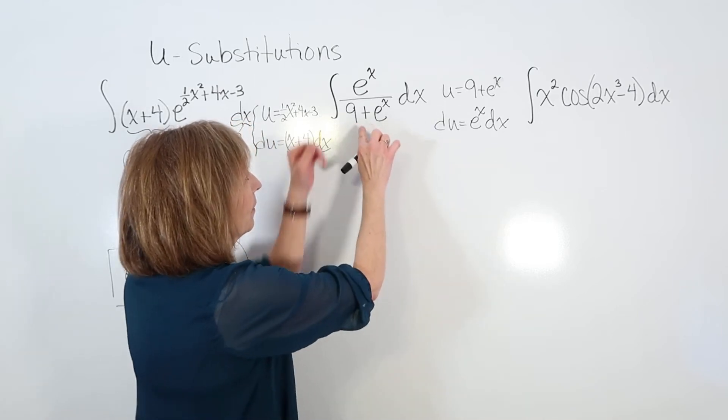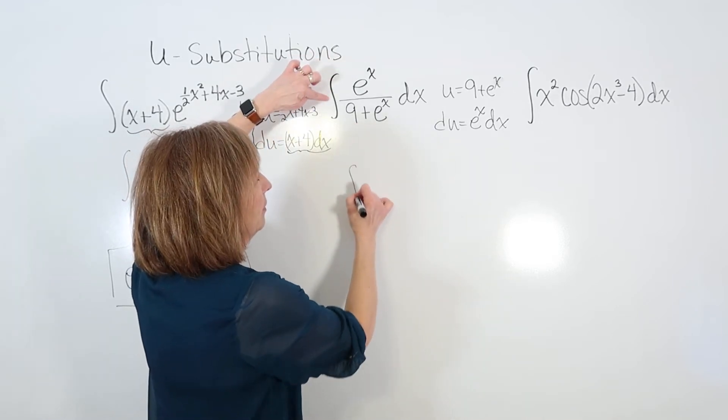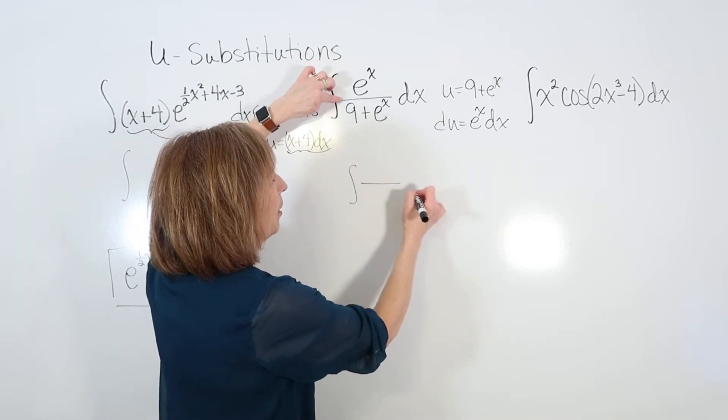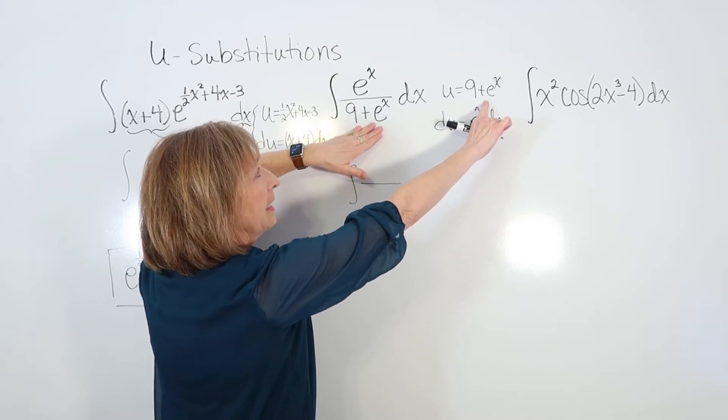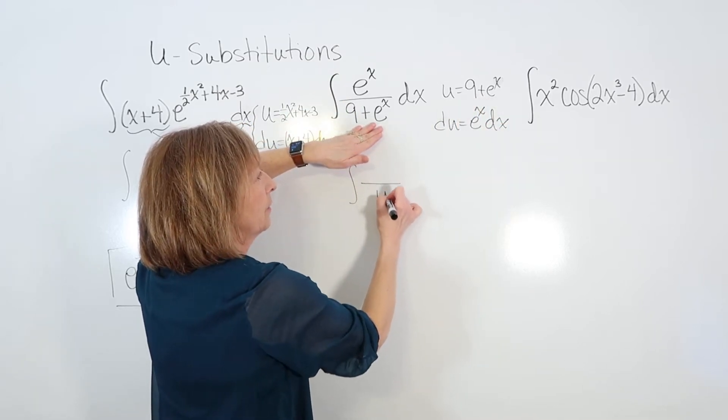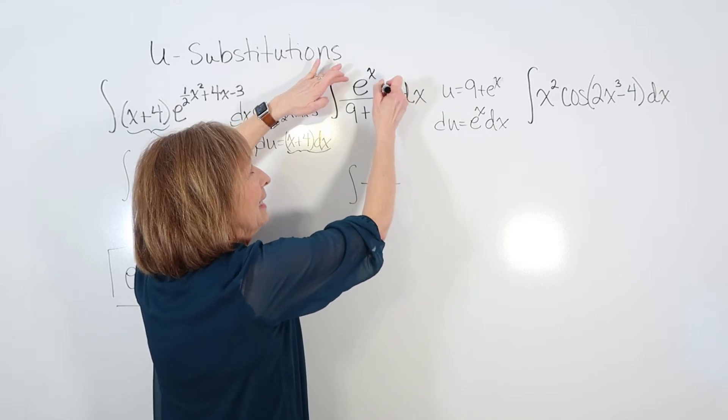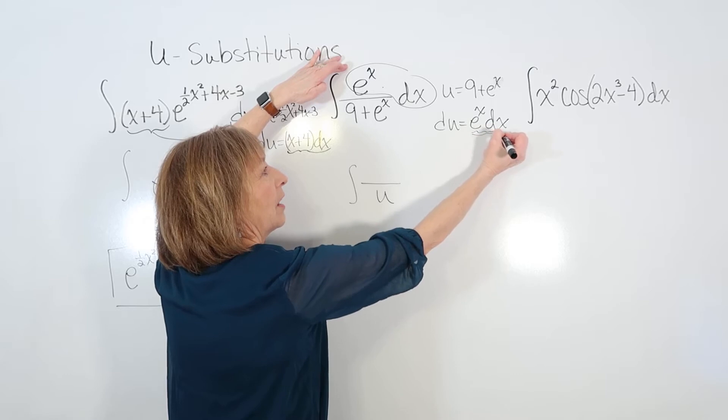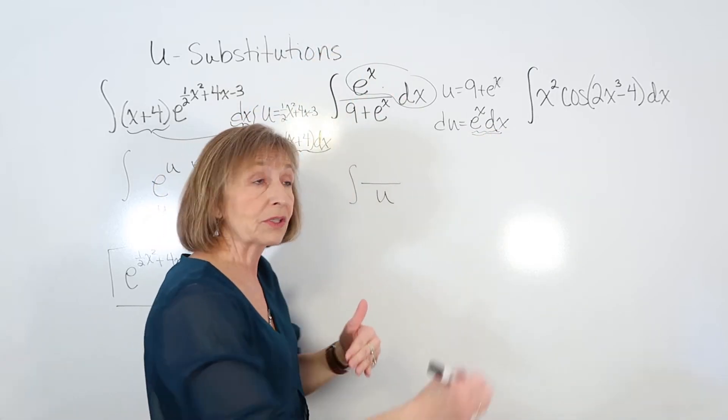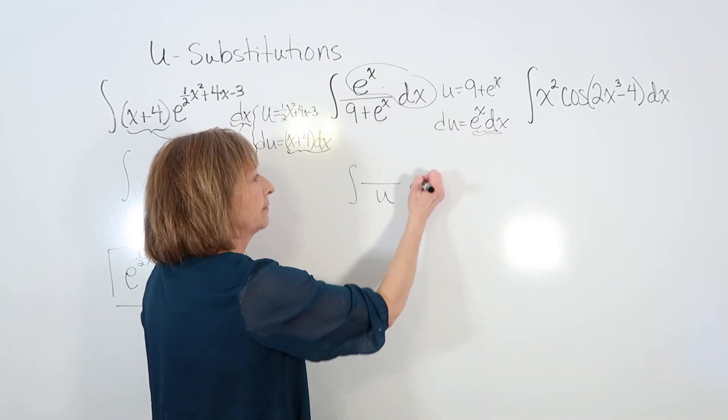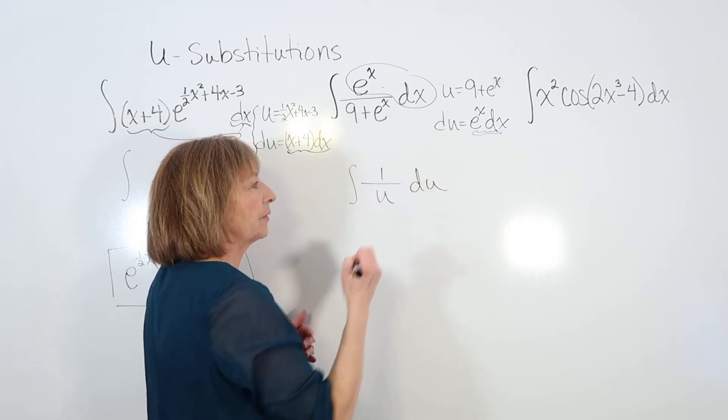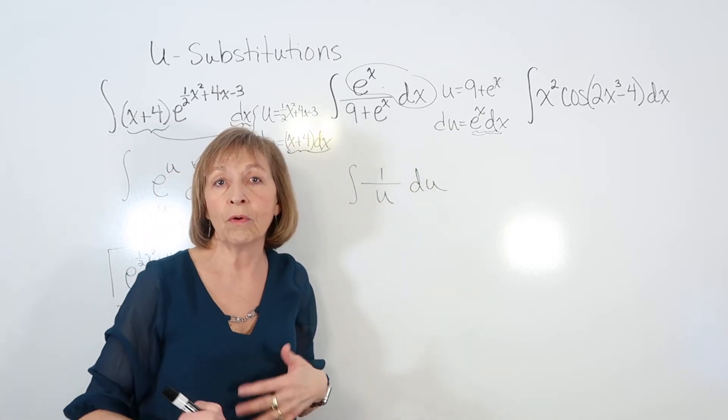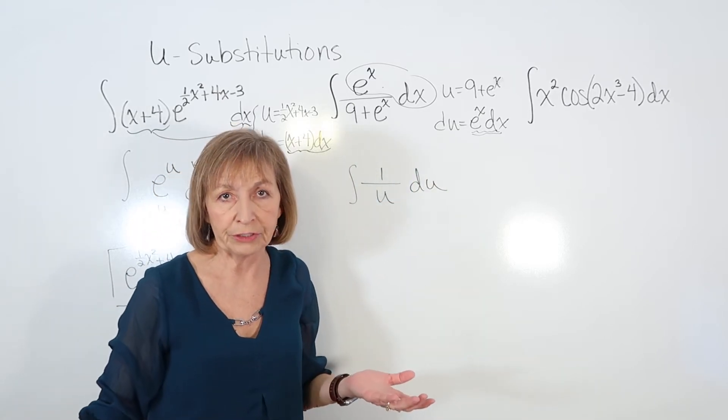So here, I'm going to have my integral. I have my fraction bar. The 9 plus e^x is the u. And e^x times dx. So these two factors together are what have to go out for the du to come in. And then I can put the 1 over u du or I could do the integral of du over u.